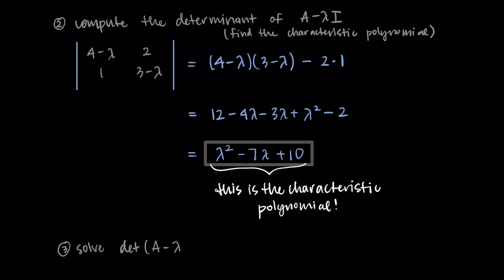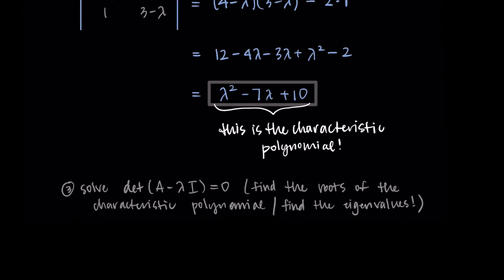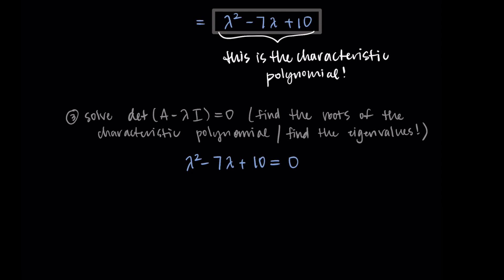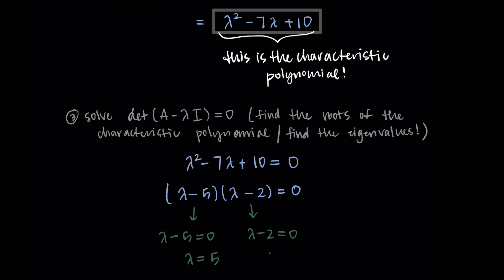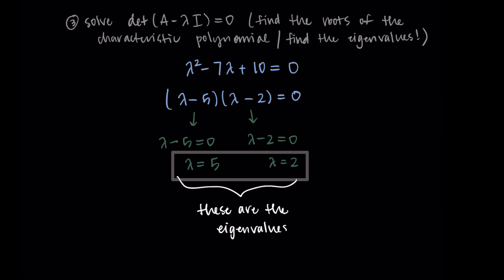In the next step, we find our eigenvalues by setting the characteristic polynomial equal to zero: lambda squared minus 7 lambda plus 10 equals zero. Factoring gives (lambda minus 5)(lambda minus 2) equals zero — that gives plus 10 for the product and minus 7 for the sum. Setting each factor to zero gives lambda minus 5 equals zero and lambda minus 2 equals zero, resulting in our two eigenvalues: lambda equals 5 and lambda equals 2. By setting the determinant of A minus lambda I equal to zero and solving for lambda, we found our eigenvalues — the special values where A times an eigenvector simply scales that eigenvector.